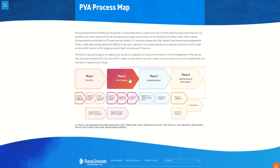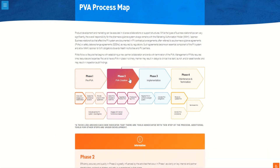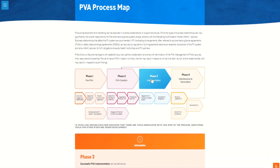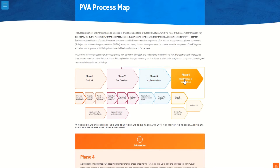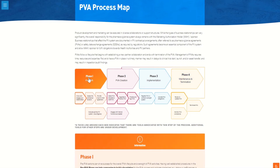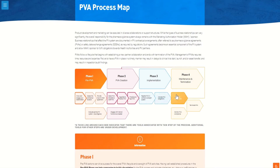In the process map website, all phases and steps are interactive. Clicking on any phase or step in the process map will enable you to find detailed information and helpful tips about the phase or step. As stated previously, phases or steps with a bold outline indicate that additional tools or links to other PVAO solutions are available. Let's take a look at one of the bold outline steps.